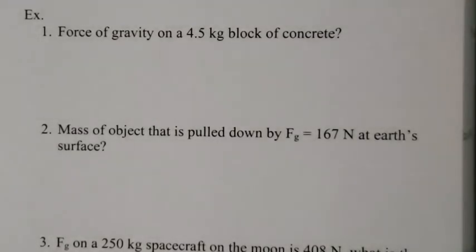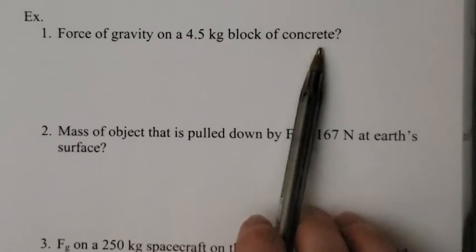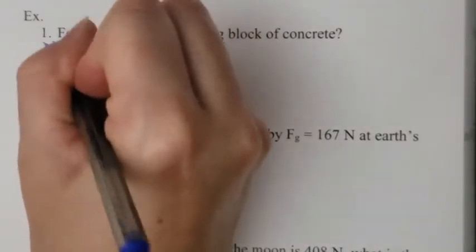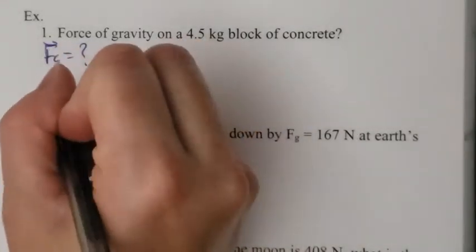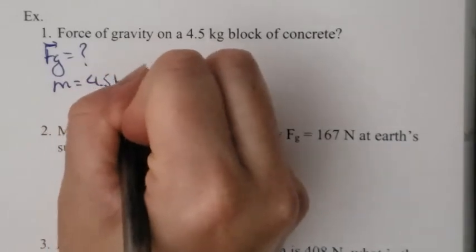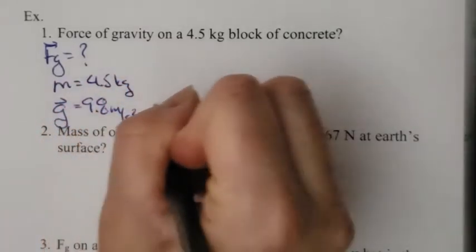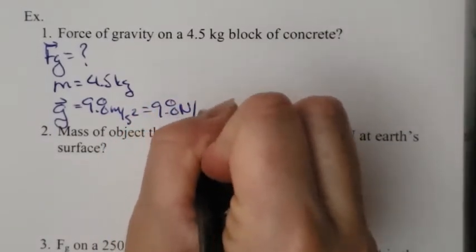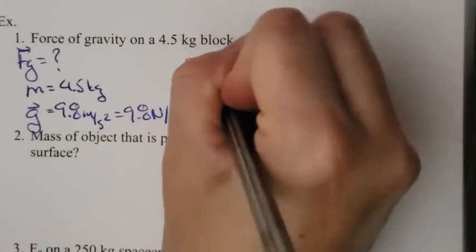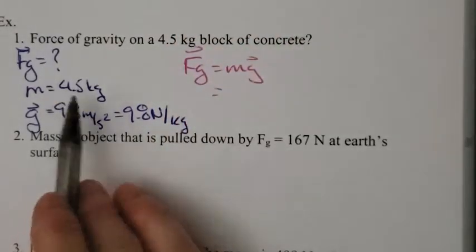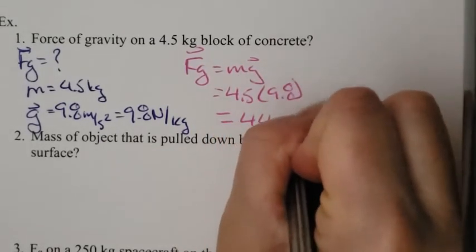Now we're going to apply this formula. So I have three examples I want to work through here. The first one says the force of gravity on a 4.5 kilogram block of concrete. So we're trying to calculate the force of gravity. So the first thing you do is you write down the given information. Fg equals question mark. The next piece of information I know is the mass. Mass is always measured in kilograms. So I know m is equal to 4.5 kilograms. And I know little g, little g on Earth is 9.8, either in meters per second squared, or we can write it as 9.8 newtons per kilogram. Our formula is simply Fg is equal to mg. You put in what you know, so the mass is 4.5, g is 9.8, you punch that into your calculator and you get 44.1 newtons.